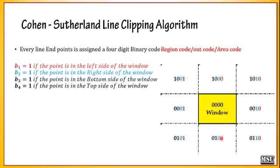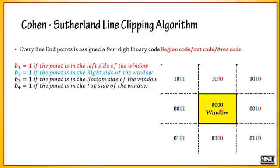b3 is 1 if the point is on the bottom side of the window — the three bottom regions have b3 equal to 1 and remaining six have b3 equal to 0. b4 is 1 at the top side — the three top regions have b4 equal to 1. We fill all the region codes accordingly. If any point is located inside the window, then the region code must be completely 0000. So for any point located completely inside the window the region code is 0000. Using this region code, we are going to implement the clipping algorithm.